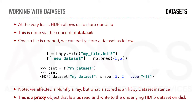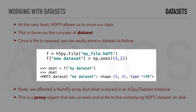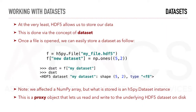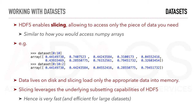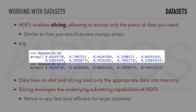HDF5 allows us to store data via the concept of a dataset. Once a file is opened, we can easily store a dataset — for example, a 5 by 2 matrix. Note that even though we assigned a NumPy array, what is stored is an h5py.Dataset instance. This is a proxy object that lets us read and write the underlying HDF5 dataset on disk. HDF5 enables slicing, allowing access to only the piece of data you need, similar to how you would access NumPy arrays. For example, you can access the first 10 elements of a dataset.